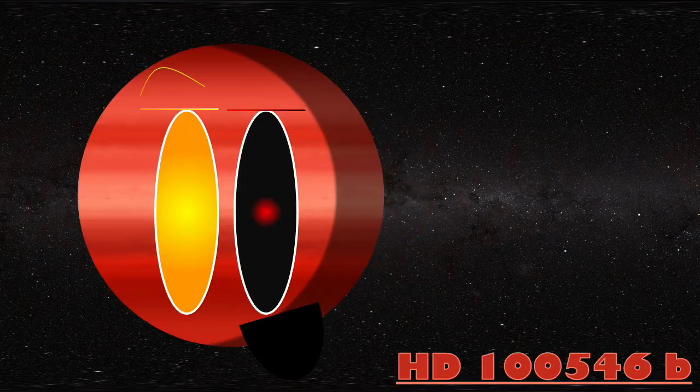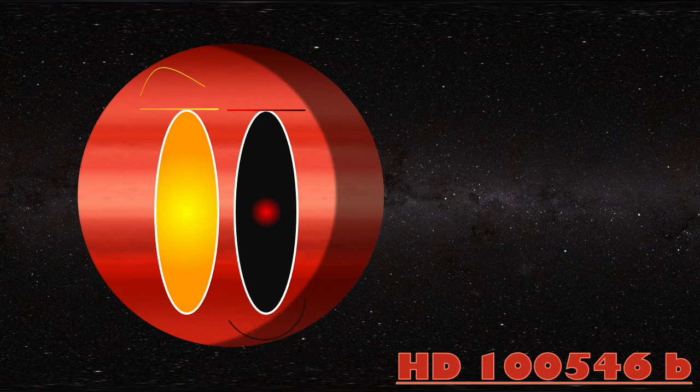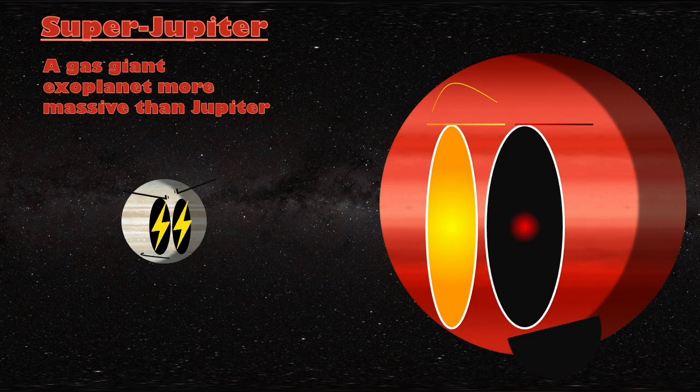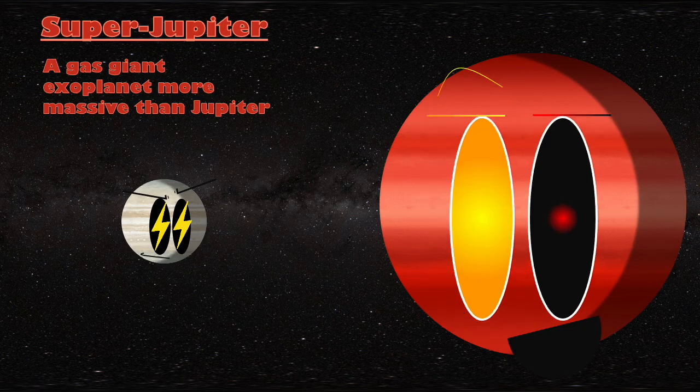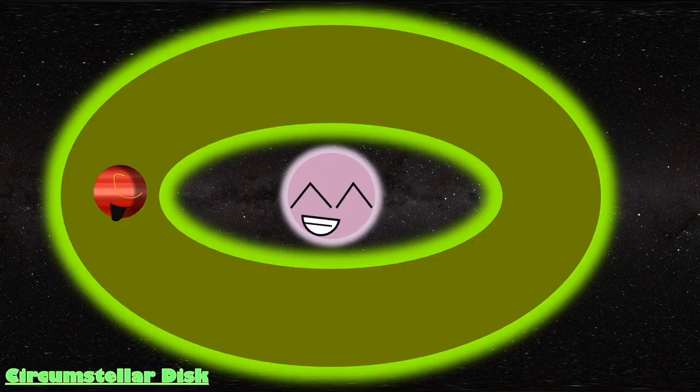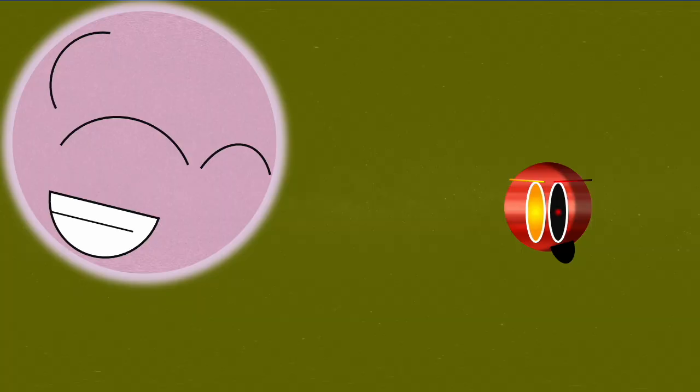I'm exoplanet HD100546b, a super-jovian gas giant planet that is one of the largest exoplanets you'll meet. I orbit a star with a circumstellar disk made up of gases, dust, and debris. The material in these disks is what forms gas giant planets, just like me.